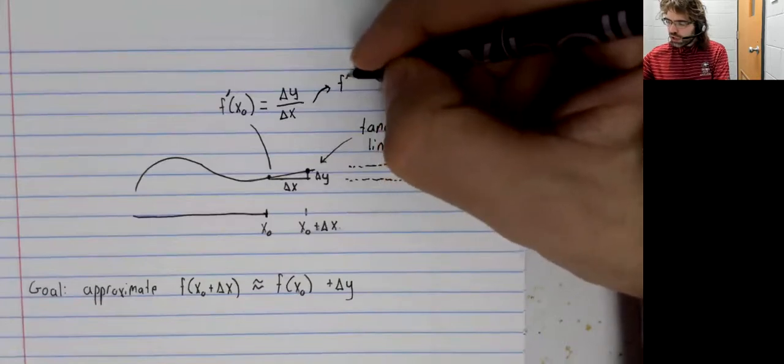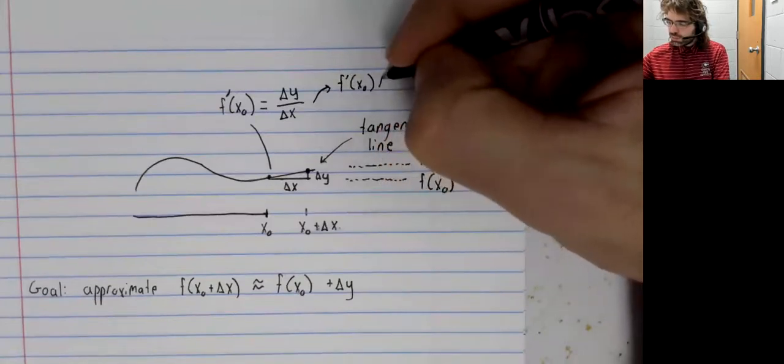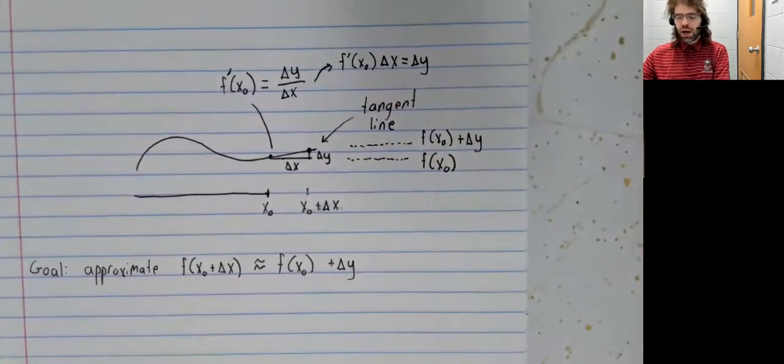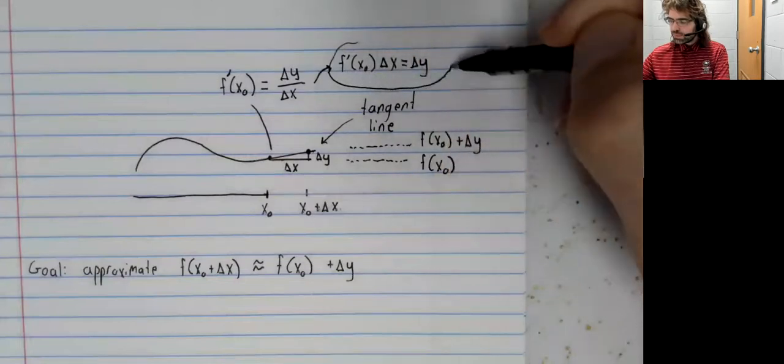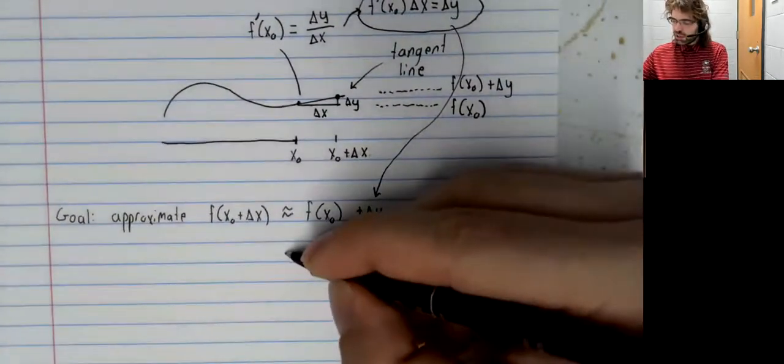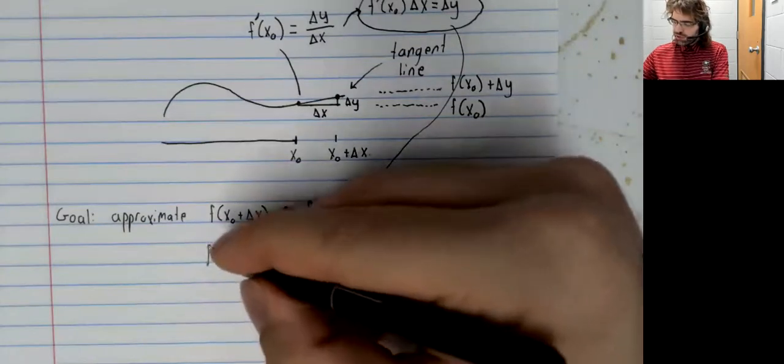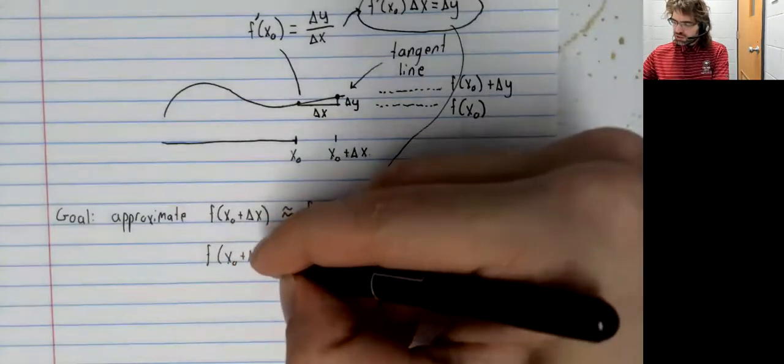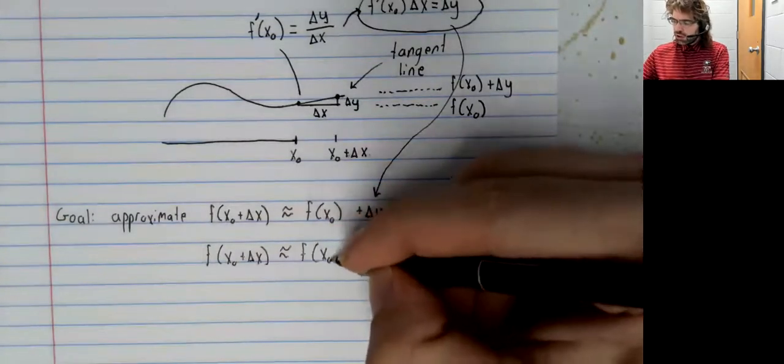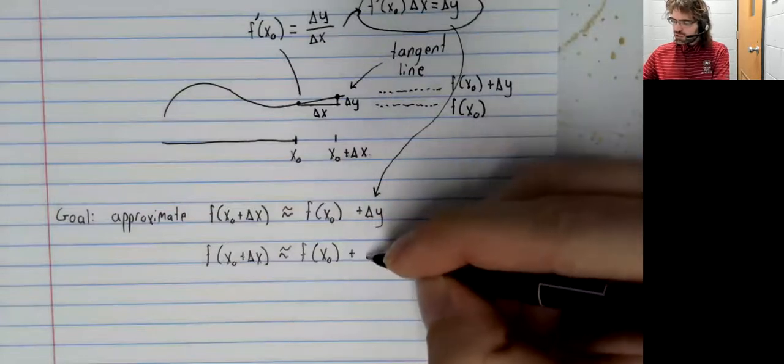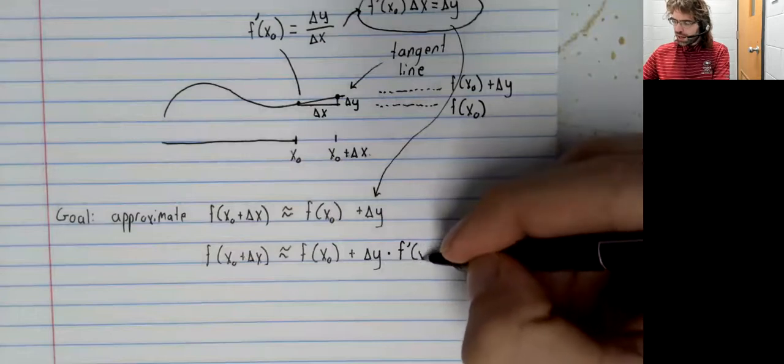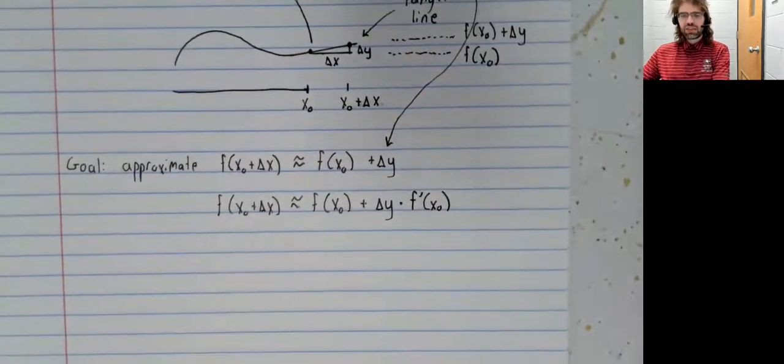From this, we can solve for delta y, giving us delta y equals f prime of x sub zero times delta x. Therefore, f of x sub zero plus delta x is approximately f of x sub zero plus f prime of x sub zero times delta x.